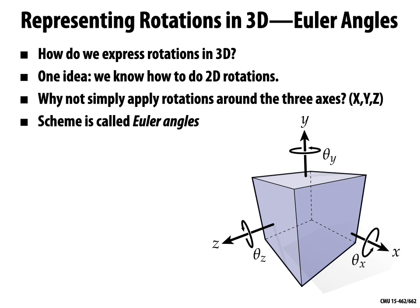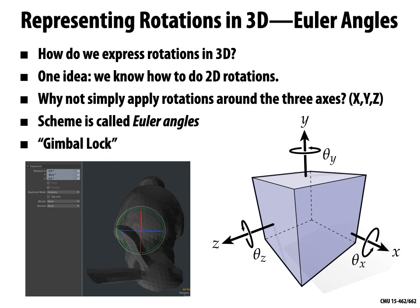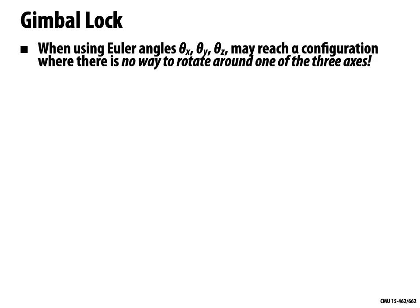The way gimbal lock works is: you're going along rotating your object with your Euler angles, adjusting θx, θy, and θz, and then you reach a moment where everything locks up — you change θy and nothing happens, or you change θz and nothing happens. Is my code broken? What's going on? Actually, gimbal lock has to do with the fundamental way we've parameterized the rotations by these three Euler angles.